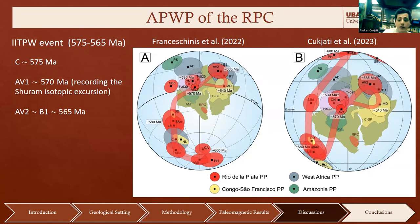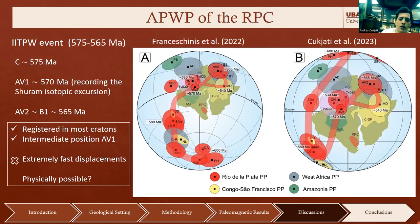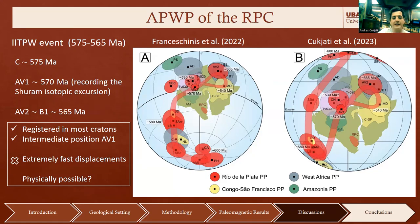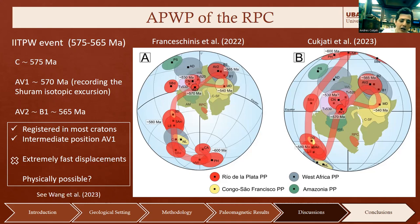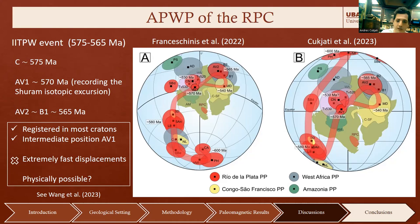If the inertial interchange true polar wander hypothesis is taken into account, the C-pole must be assigned an age of 565 Ma, the B1 pole 565 Ma, consistent with the AB2 pole, and the AB1 pole perhaps 570 Ma — in perfect agreement with the Shuram isotopic excursion registered in the marls of this formation. The positive aspect of this theory is that it is registered in most cratons and can easily explain the intermediate position of the AB1 pole, though the extremely fast displacement remains a problem.